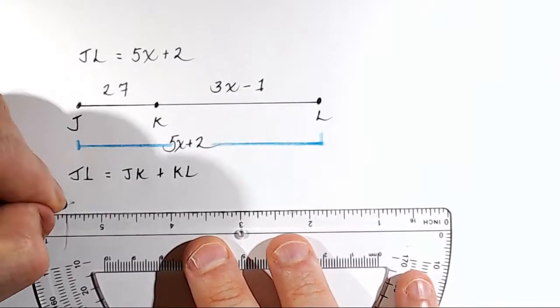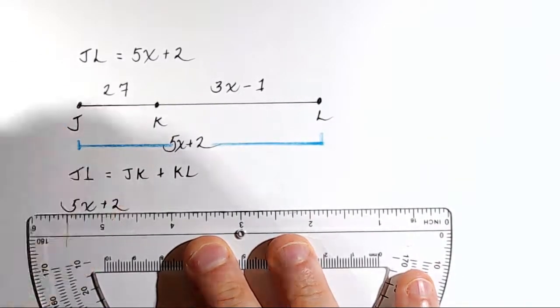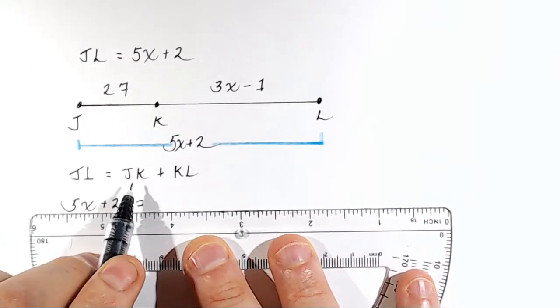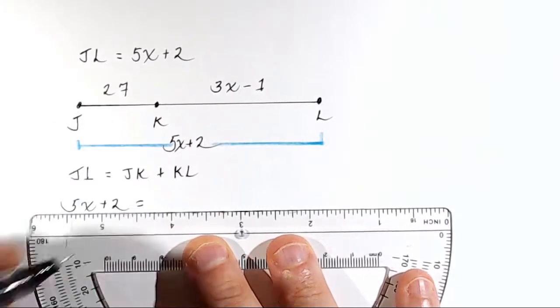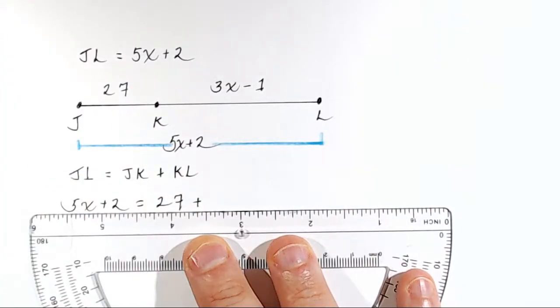Instead of writing JL now, I'm going to write 5X plus 2. And I'm going to set that equal to JK, which is 27, plus whatever KL is, 3X minus 1.